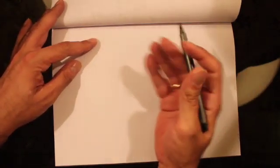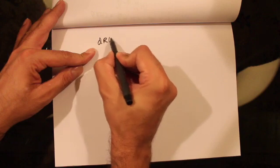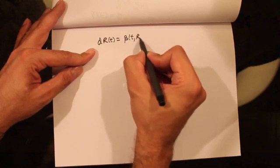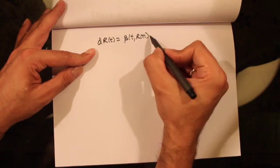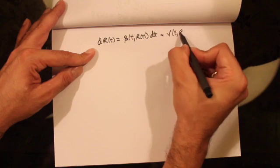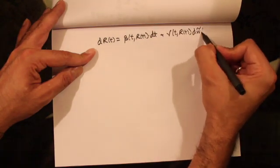Hi guys. So today let's try to apply what we've learned so far to interest rate models. Let's consider a stochastic differential equation for an interest rate process given by dr(t) = β(t)r(t)dt + γ(t)r(t)dW̃(t).